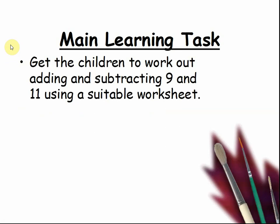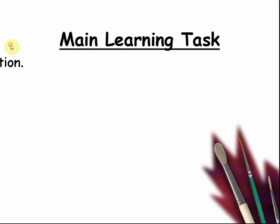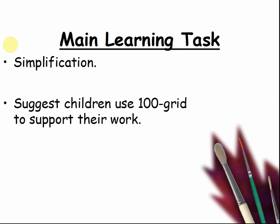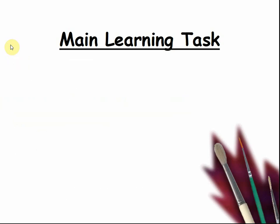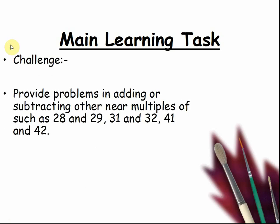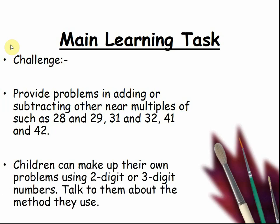Get the children to work out adding and subtracting 9 and 11 using a suitable worksheet. Simplification: The children use a 100 grid to support their work. Discuss the patterns they can see. Challenge harder: Provide problems in adding or subtracting other near multiples such as 28 and 29, 31 and 32, 41 and 42. Children can make their own problems using 2 digit or 3 digit numbers. Talk to them about the method they use.